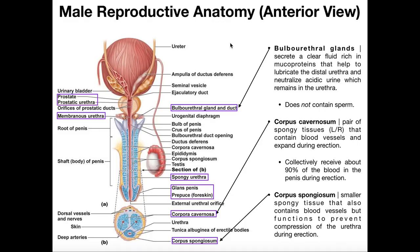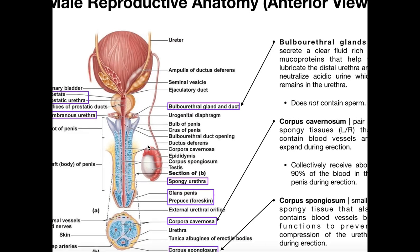Welcome back to Anatomy and Physiology on Catalyst University. My name is Kevin Tokoff. This is going to be the third video where we're looking at the anatomy of the male reproductive system. Here we're going to look at an anterior view and see more of the anatomy of the penis, including some structures we haven't talked about yet, along with a review of some important structures.